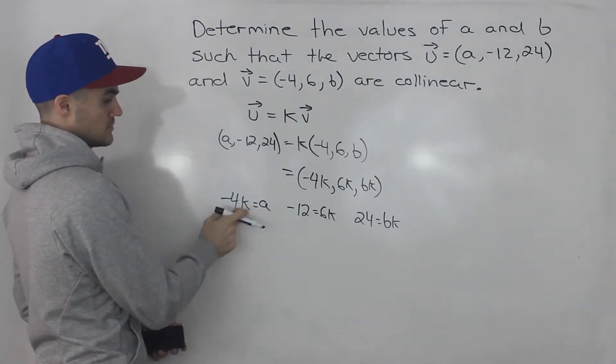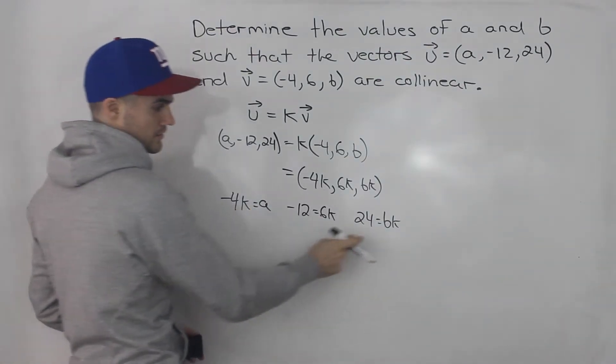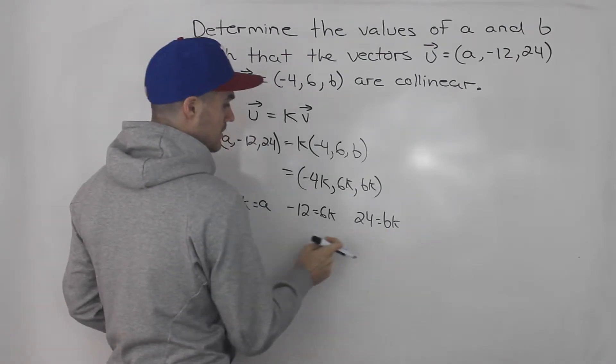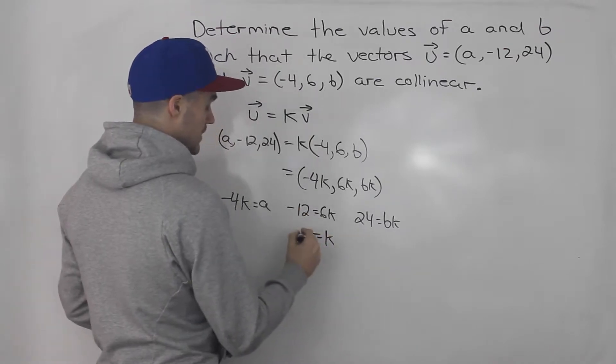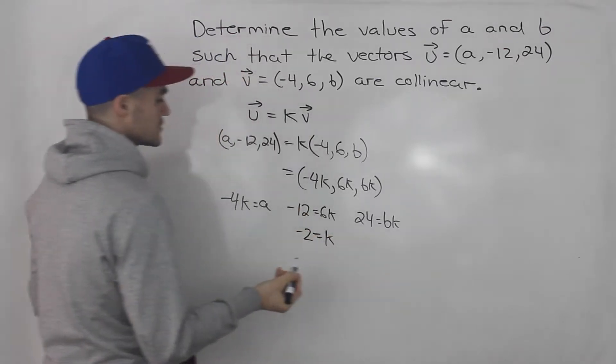So notice with this one, there's two unknowns, an A and a K. Here, two unknowns, B and a K. But here, we can solve for K. So the K value is just -12 divided by 6, which is -2.